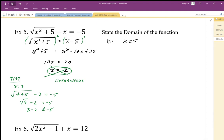So what would this graph look like? I wouldn't really expect you to know what this graph looks like, but if I were to graph this, I would graph y equals square root of x squared plus 5. That's my y1. My y2 is going to be x minus 5.